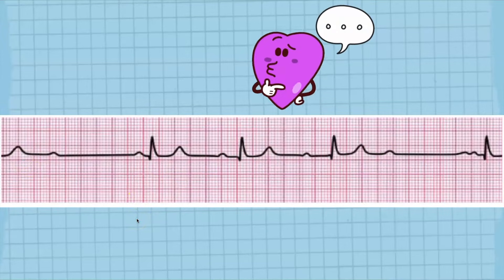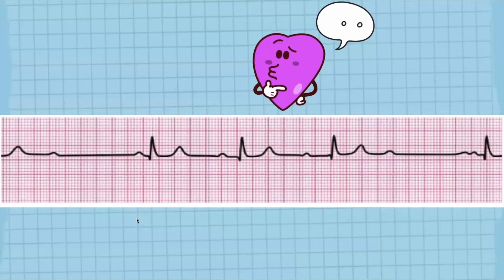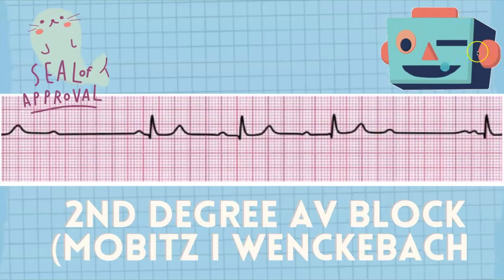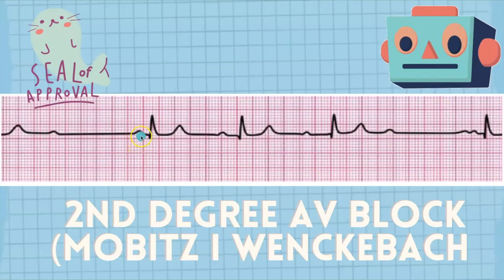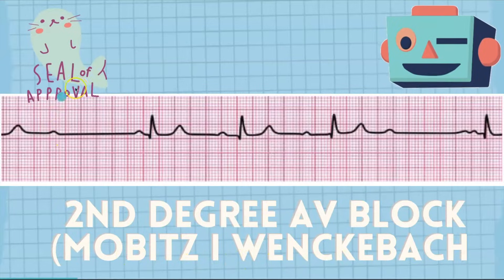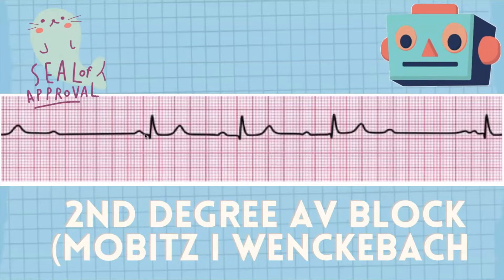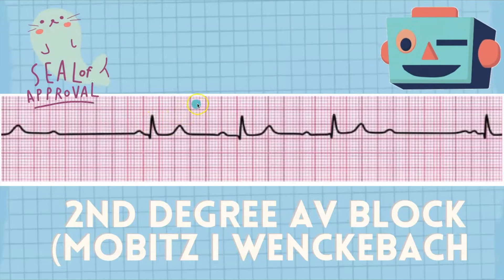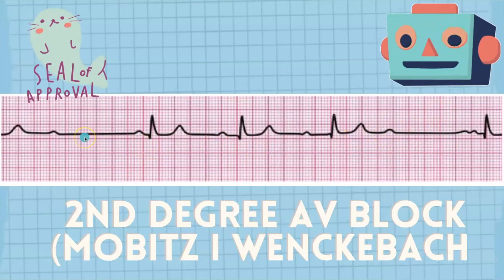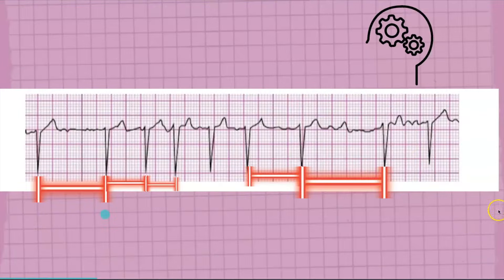The pattern is: longer, longer, longer, then drop — that's the Wenckebach, also called the Wincky Block. This is the second degree AV block. Is it Type 1 or Type 2? Well, we wink with one eye, so if you wink with one eye it's Type 1. This rhythm is Second Degree AV Block Mobitz Type 1, aka the Wincky Block. The PR interval will gradually elongate until the P wave is completely blocked and you don't see the QRS complex.